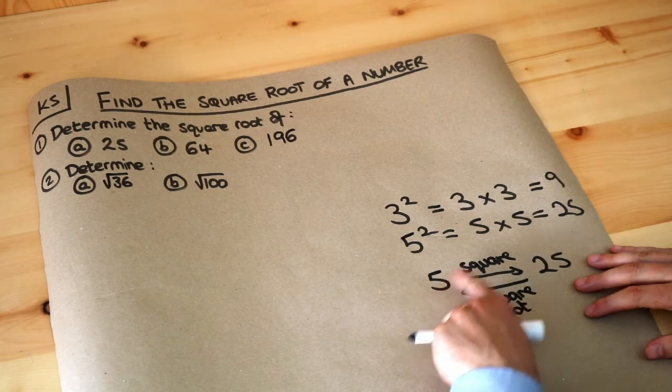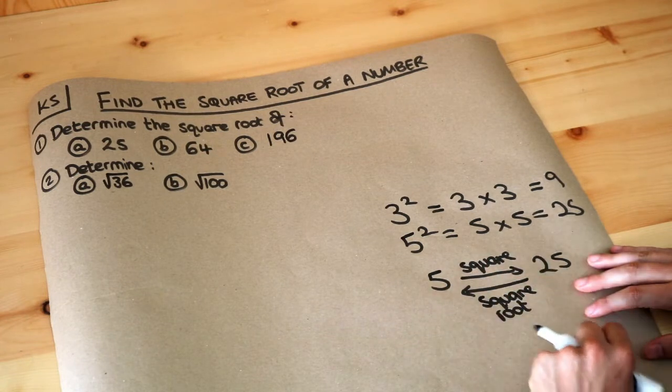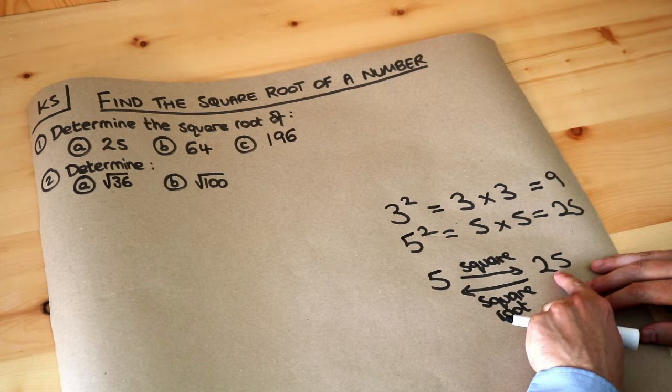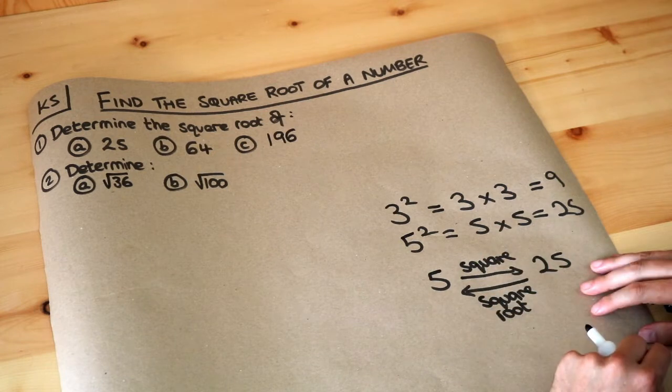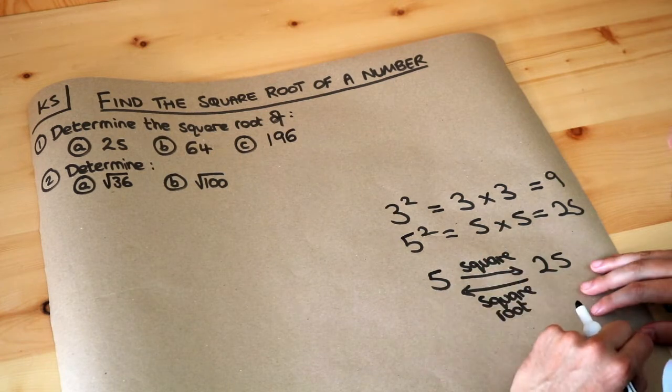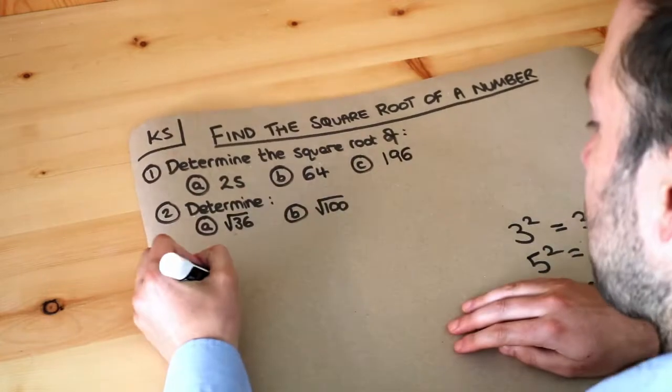then square rooting does the reverse process. It works out what the original number squared was to get that number. So the square root of 25 says, what number squared would give you 25? Well it's 5.